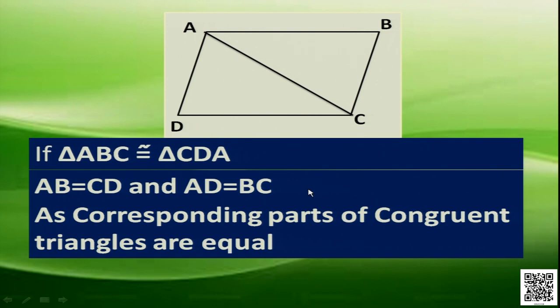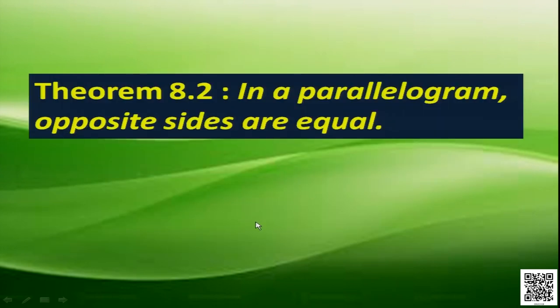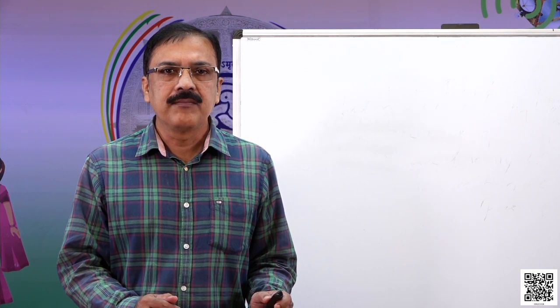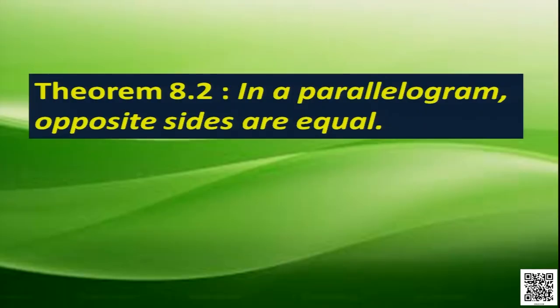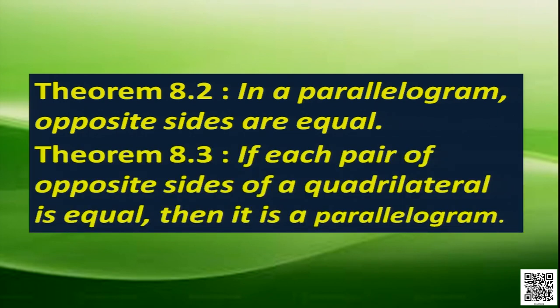This can be stated as a theorem: In a parallelogram, opposite sides are equal. What is the converse of this statement? In the original theorem, parallelogram is given and equal opposite sides are proved. In the converse, equal sides are given and we have to prove the quadrilateral is a parallelogram. So the converse states: If each pair of opposite sides of a quadrilateral is equal, then it is a parallelogram.